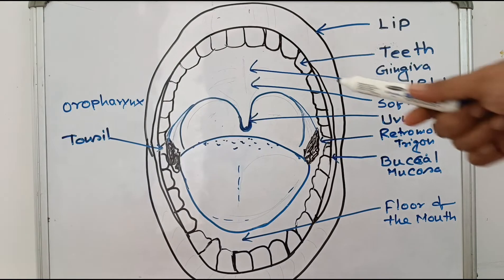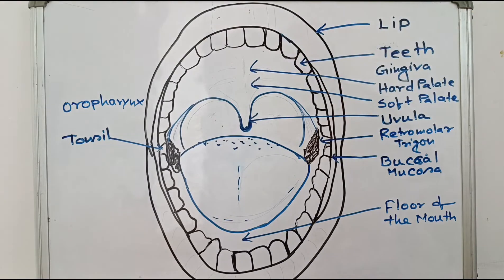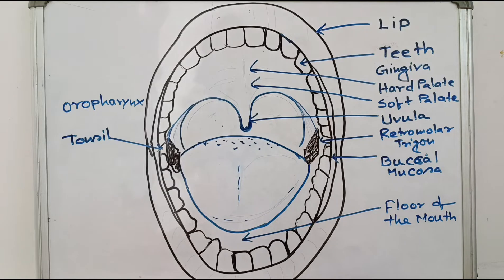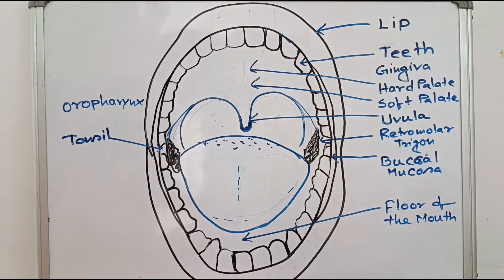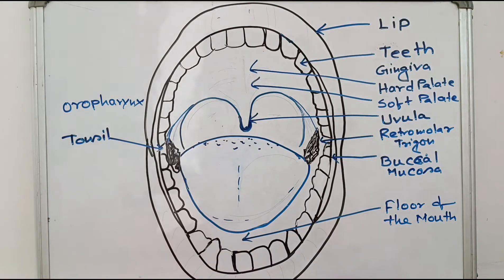Where the teeth are set, this is the gingiva. You have to check for any bleeding, any inflammation, any swelling, any color change, any aphthous ulcer, any leukoplakia, or erythroplakia. Fold the lips upward to check the gingiva. The gingiva is the most prone area to bleeding because there are lots of capillaries and blood vessels. From the gingiva, you can check any pathological condition.